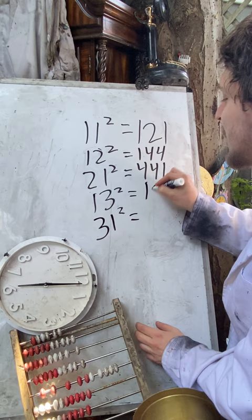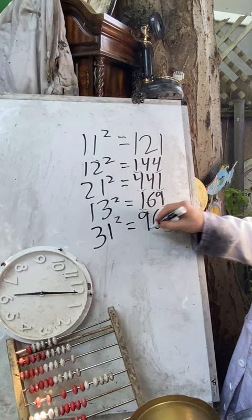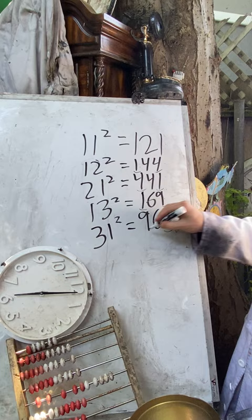And in each of these cases, the outside digits we got are squares of the two starting digits, and the inside digit is twice the product of those digits, which is why if I tried to do a similar thing with 14 and 41, it wouldn't work.